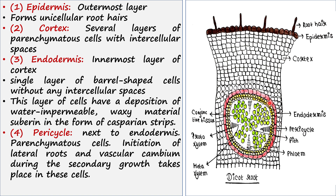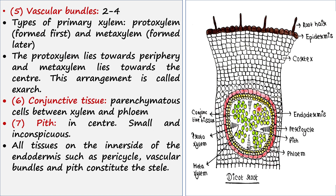Next to the endodermis we find the pericycle — these yellow cells are the pericycle. The initiation of lateral roots and vascular cambium during secondary growth takes place in the pericycle.